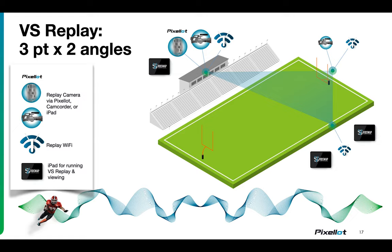Here's an overview of what the setup looks like. You've got a typical three-point, two-angle system where one point goes up into the press box. That plugs into potentially the school network where the Pixelot camera is being pulled from, or a camcorder is plugged in, or an iPad is being used, or one of our IP cameras. There's a Wi-Fi hotspot up top for all the coaches in the press box. The second point plugs into an existing end-zone camera, or our automated camera that your filmer controls from anywhere. Then a third point on the sideline increases Wi-Fi coverage across the whole field, ensuring coaches have a great experience.